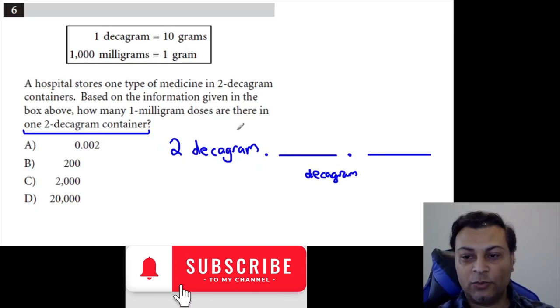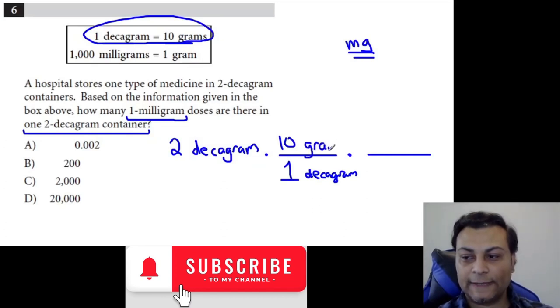We can convert. We're trying to get to milligrams. That's our goal. Decagram you can convert to grams using this relationship. One decagram is 10 grams. So far, we've converted to grams.